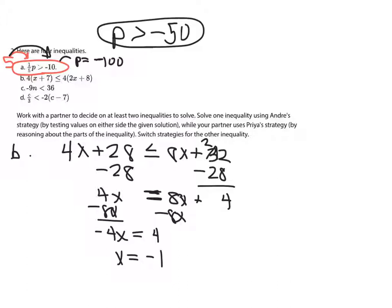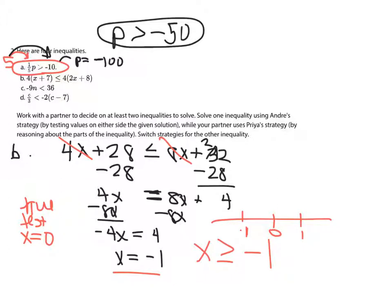Now I'm going to test a number smaller. If I test 0 because I like testing 0, that would wipe that out. We would say is 28 less than 32? That is in fact true. Because I tested x equals 0, so our solution has to include x equals 0. So we need x to be bigger than or equal to negative 1 because that includes 0. If we did a number line, negative 1 is here and then 0 and then 1.